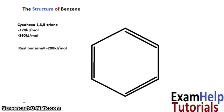The actual structure of benzene has much less energy compared to the proposed Kekulé structure. Benzene is 152 kJ/mol more stable than Kekulé's structure would predict, and this energy difference is known as the delocalization energy or resonance energy of benzene. We'll cover the actual delocalized model of benzene in a future video. I hope this helped explain why Kekulé's structure isn't actually correct. That was ExamHelp — thank you for watching.